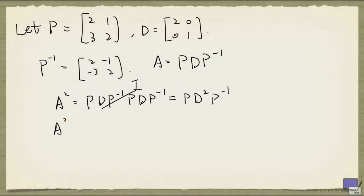And what about A cubed? A cubed is A times A squared. And so this is P times D times P inverse times A squared is now this thing over here. P times D squared times P inverse. Again, this becomes the identity. So what we get is P times D cubed times P inverse.